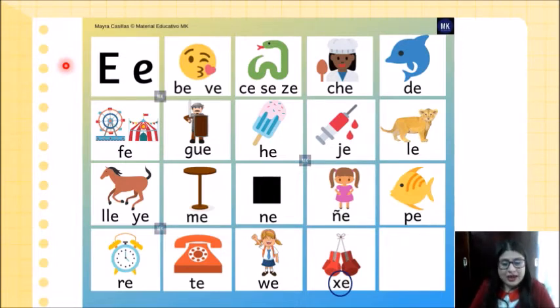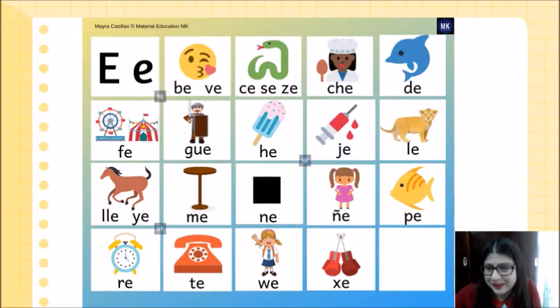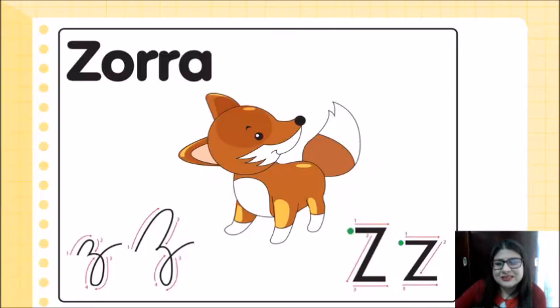Muy bien, chicos, lo hicieron fantástico. Ahora, mis corazón, no olviden echarle un ojito de vez en cuando a su tablita de la vocal A para seguir reforzando lo que ya conocemos, ¿verdad? Ok, corazones, fíjense bien. Les había dicho que el día de hoy íbamos a tener un tema nuevo. No tan nuevo porque esta letra ya la conocemos. En la pantalla nosotros tenemos aquí una letra. La tenemos en mayúscula y en minúscula.